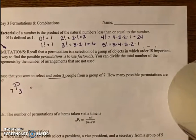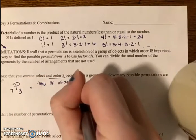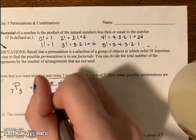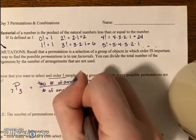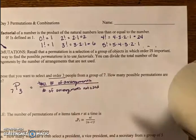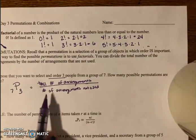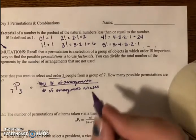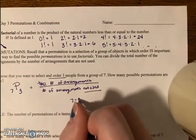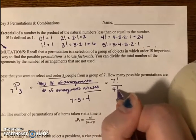The permutations really are the total number of arrangements over the number of arrangements not used. So if I want the total number of arrangements, there's a group of seven people, so seven is the total number. And then the number of arrangements not used, well if three is the amount that is used, what's not used is going to be seven minus three, so in this case that's going to be four.